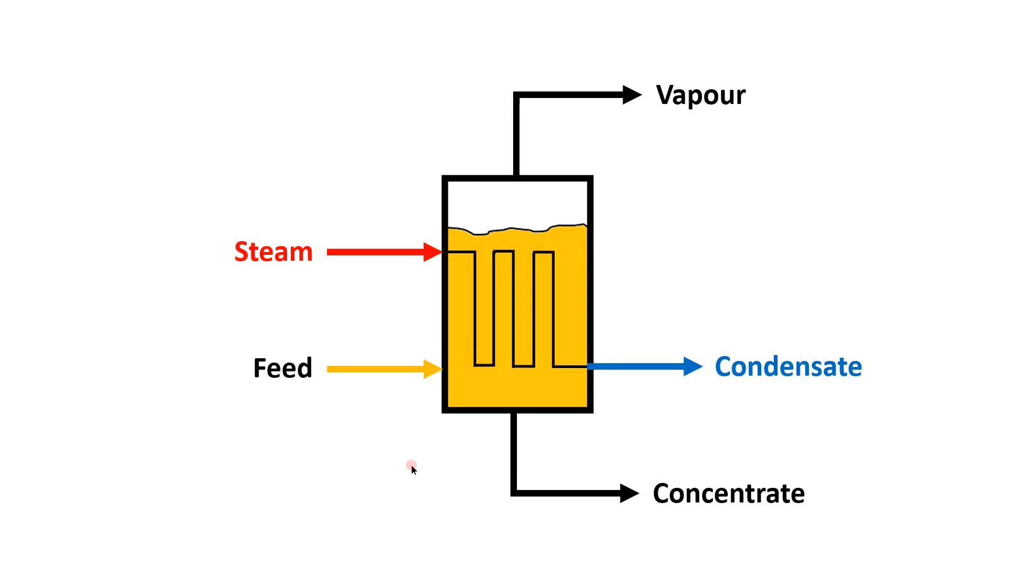The cold feed solution containing the dilute orange juice is pumped into the vessel, usually through an inlet at the bottom of the evaporator.